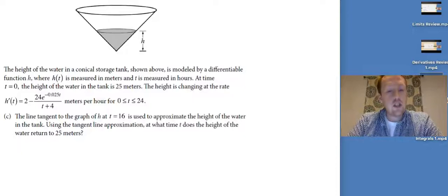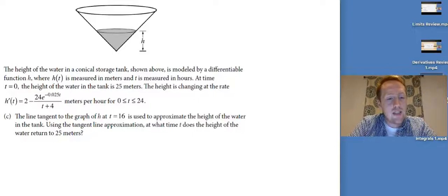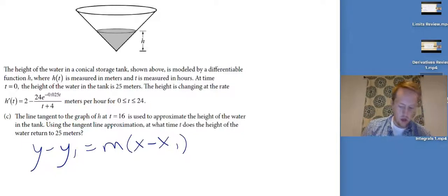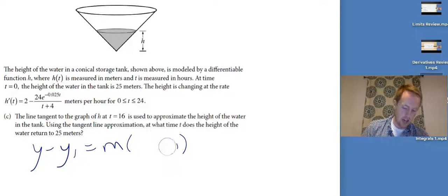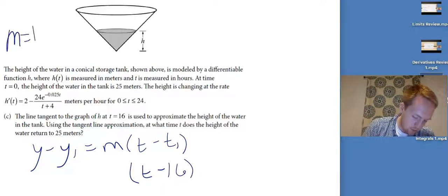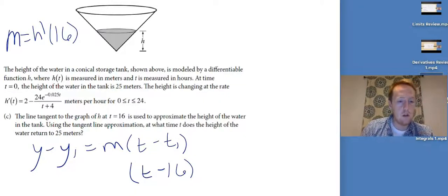Now: the line tangent to the graph of H at T equals 16 is used to approximate the height of the water in the tank using the tangent line approximation. At what time T does the height of the water return to 25 meters? I know I need y minus y1 equals m times (x minus x1) — really in T's since this is all in terms of time. The T1 they gave us is 16, so it's T minus 16. Now I need to use H prime of 16 as my slope.